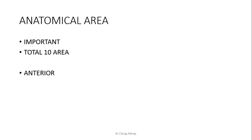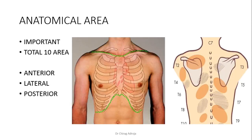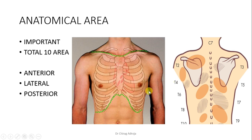Total about 10 areas: anteriorly 4, laterally 2, and posteriorly 4. Anteriorly: supraclavicular, clavicular, infraclavicular, and mammary or pectoral area. Supraclavicular is above clavicle; clavicular is up to the lower border of first rib; infraclavicular is up to the third rib; and mammary area is below the third rib. Some textbooks also describe mammary area as supra-mammary, mammary, and inframammary. Laterally it is axillary and infraaxillary. Posteriorly it is suprascapular, scapular, interscapular, and infrascapular.